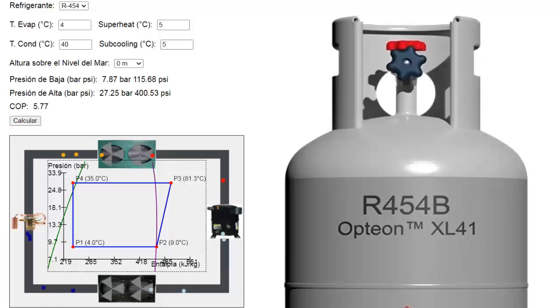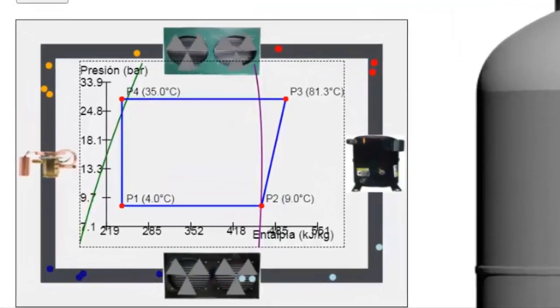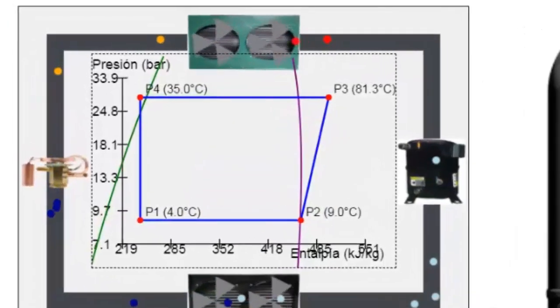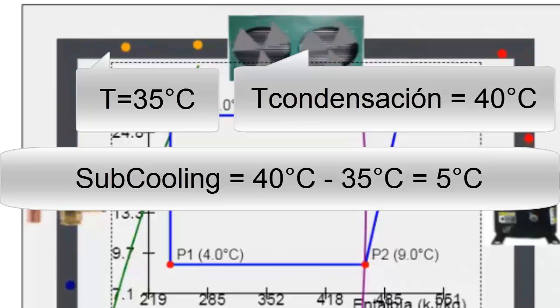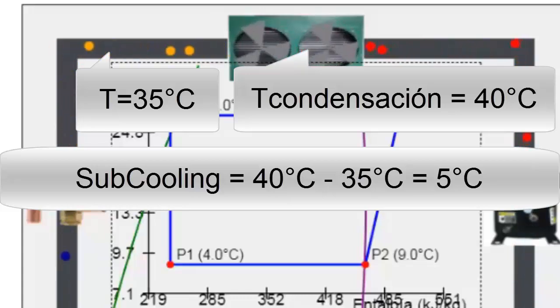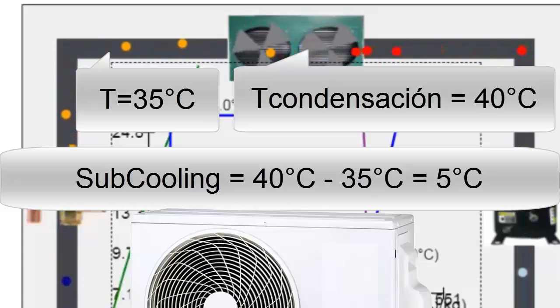For instance, if the condenser's outer surface is clean and there is adequate airflow, slightly higher subcooling values can be achieved. However, it's important to note that in hot climates or under unfavorable heat exchange conditions, such as low fan speed or a dirty condenser coil, subcooling can drop below 5 degrees Celsius and even reach 0 degrees Celsius.